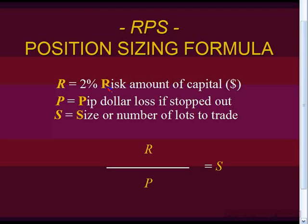RPS: R equals that 2% risk amount — so if you have a $10,000 account, you're risking $200. P equals the pip dollar loss if stopped out, so if you lost $500, that equals P. And S equals the size. We want R divided by P, and this gives us our size — just round it to the nearest number. I know this may seem like a lot to calculate before every trade, and in the heat of the moment you might lose concentration, but after practice, maybe paper trading, it's really not as difficult as it seems. You'll get very used to it, and it'll make you a better trader by adding more structure on the money management side.